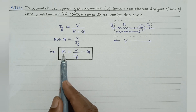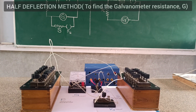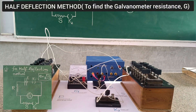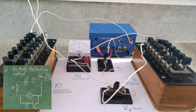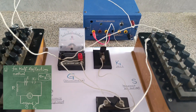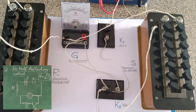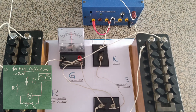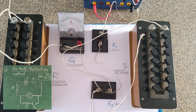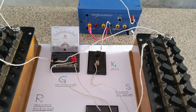Using this formula, we get the value of capital R. A galvanometer is a device used to detect small electric current in a circuit. It has a moderate resistance and a very small current carrying capacity. The resistance of a galvanometer can be found by using the half deflection method. The circuit diagram for this method is as shown.